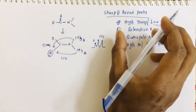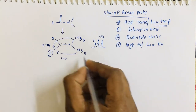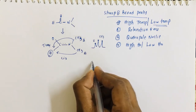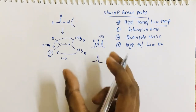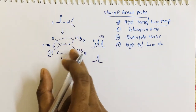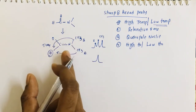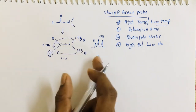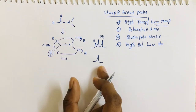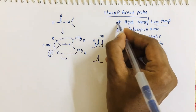At high temperature, the averaging of these three signals takes place and we get a single line only, because the methyl groups get exchanged and the double bond character is also present. Because of that we get an average signal — for all seven protons we get one average singlet at high temperature.